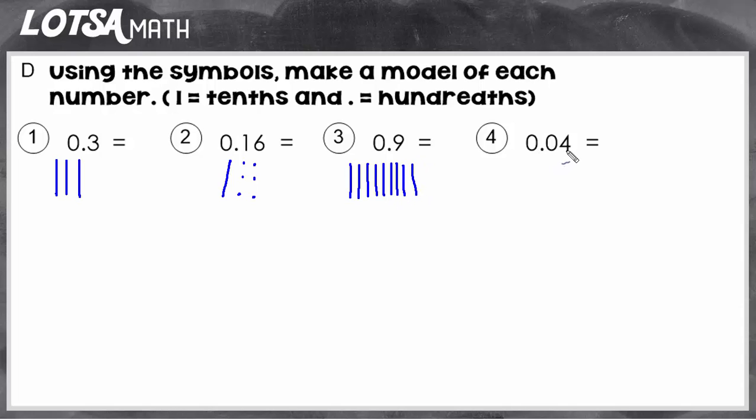Number 4 is tricky. Make sure you're paying attention to the place that it's in. Since there's a 4 in the hundredths place, it really just means 4 hundredths, represented by the little dot.